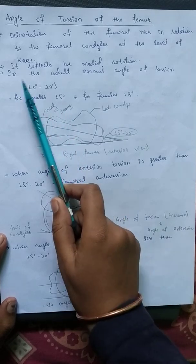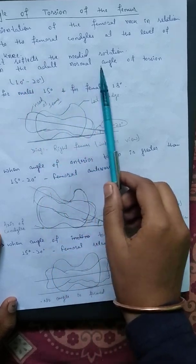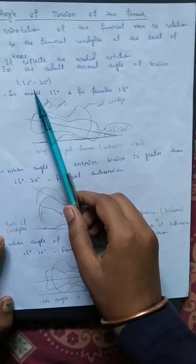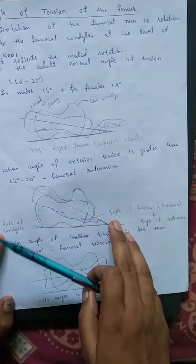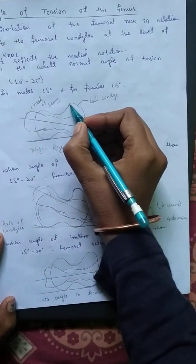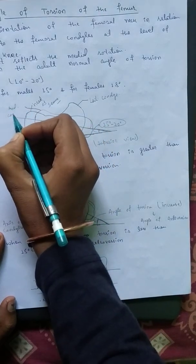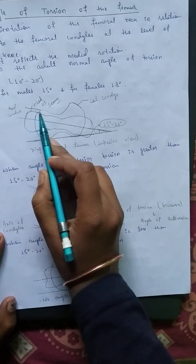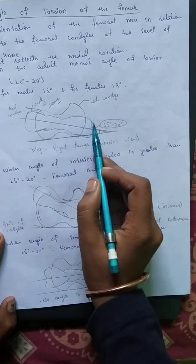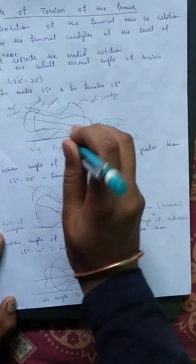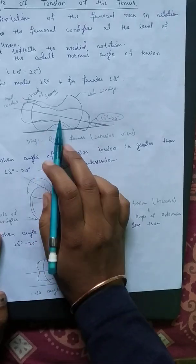Now, the normal angle of torsion: in adults, the normal angle of torsion is 10 to 20 degrees. For males, the value is 15 degrees, and for females it is 18 degrees. In this diagram, you can see the lateral condyle, the medial condyle, and the head of the femur with the neck area. The normal angle formed is 15 to 20 degrees. This is a diagram of the right femur, superior view.